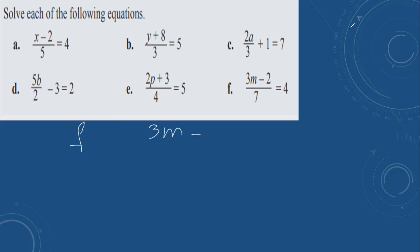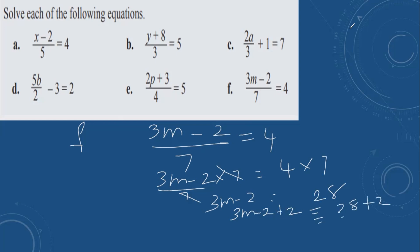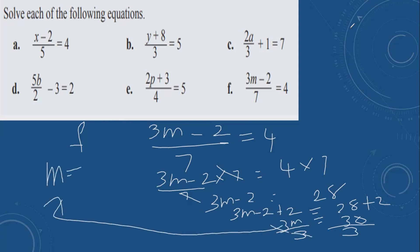Then f: (3m minus 2) divided by 7 equals 4. Multiply both sides by 7 to remove the 7. These cancel. 3m minus 2 equals 4 times 7, which is 28. The opposite of minus 2 is plus 2 on both sides. 28 plus 2 is 30. 3m equals 30. Divide by 3. 3 and 3 cancel. 30 divided by 3 means m equals 10.